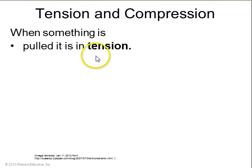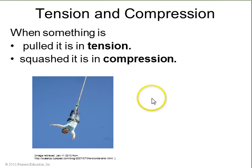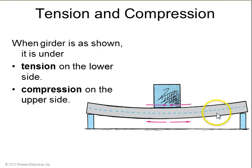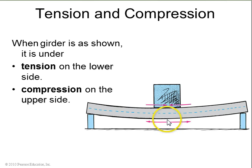When something is pulled, this is called tension — for example, a bungee cord supporting a person is under tension. When something is squashed, it's under compression — like a baseball being pushed by a bat so it squishes a little. A girder supporting a box is both under tension and compression: the bottom part is stretched while the top part is compressed. Solids are usually a lot stronger under compression than under tension, so if the beam were to break, it would happen on the bottom part first.